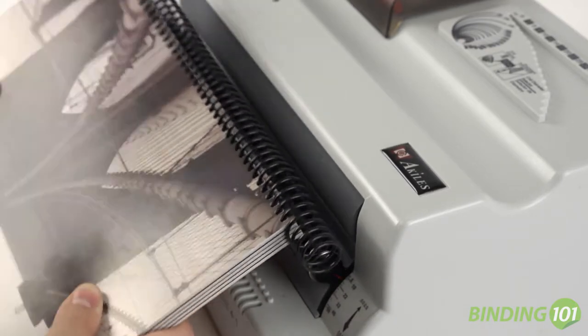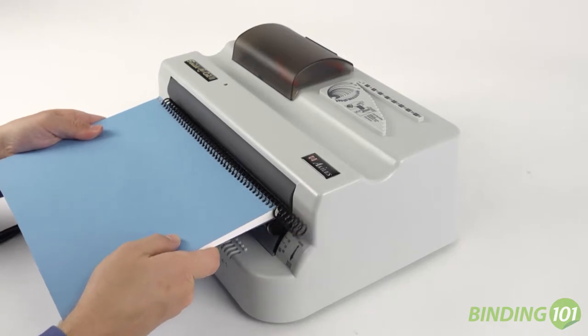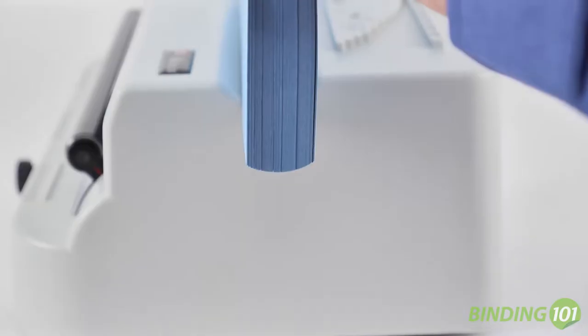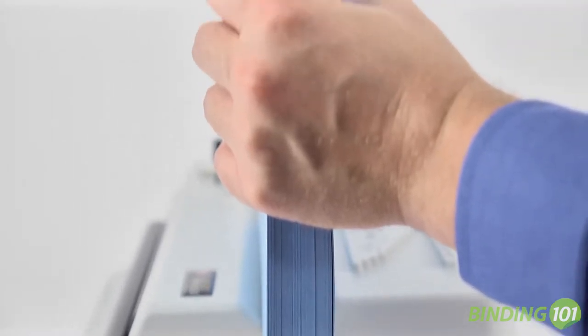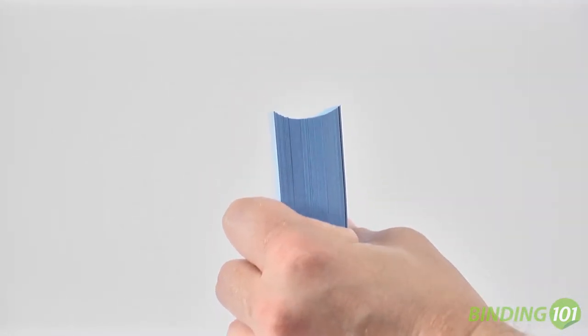This electric roller inserter is foot pedal activated, which allows the operator the use of both hands while having control of the roller. The U-shaped alignment channel assists the operator to properly shape the document's spine for faster and easier coil insertion.